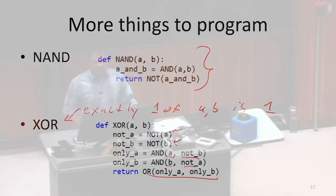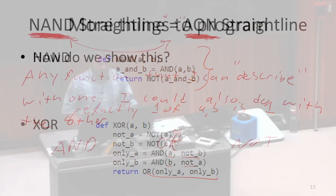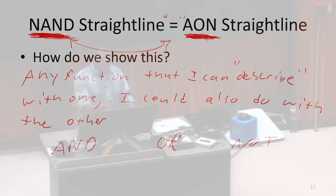As we said, we've already done one direction. So now in order to finally show that these are two equivalent models of computation, we need to show the other direction as well. So we need to show that I can take any AND, OR, NOT program and rewrite it using exclusively NANDs. If I can do that, then that means that I could have taken any program I wrote as an AND, OR, NOT program and rewritten it as a NAND straight-line program that computes exactly the same function.